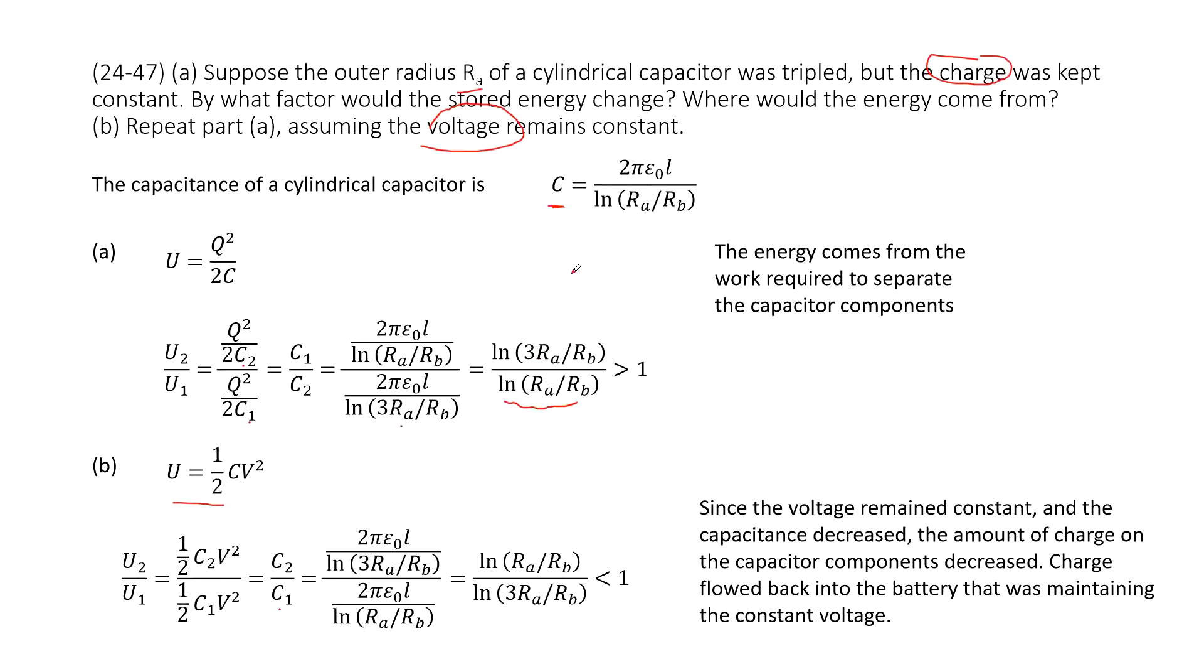Input the initial capacitance and final capacitance. The initial outer radius is just Ra. The final outer radius is 3 times Ra. Organizing it can be simplified as this term.